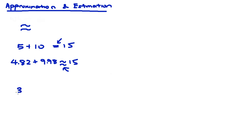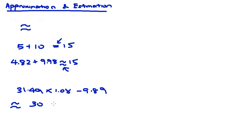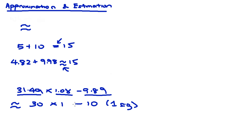Here's an example where approximation really helps: 31.49 × 1.08 − 9.89. This would take a while without a calculator. But by approximating each to one significant figure — 31.49 ≈ 30, 1.08 ≈ 1, and 9.89 ≈ 10 — we can quickly calculate 30 × 1 − 10 = 20. Note that the final step uses an equals sign, not approximately, since 30 × 1 − 10 is exactly 20.